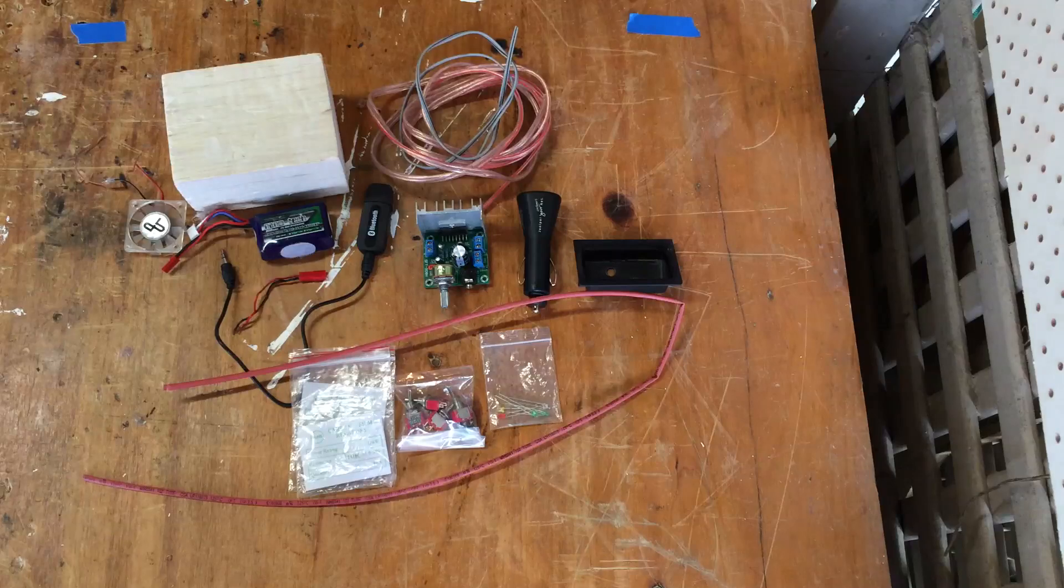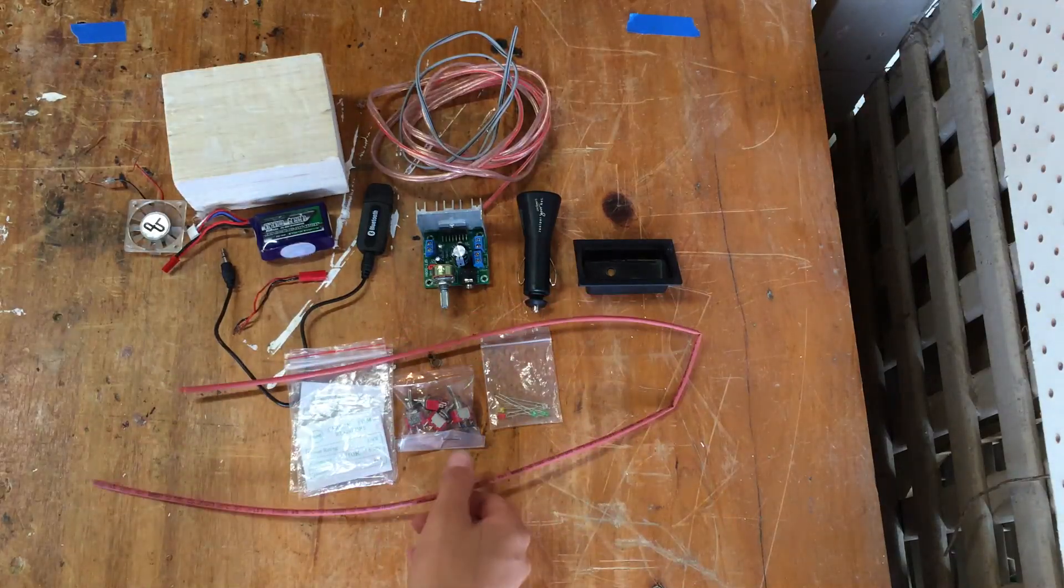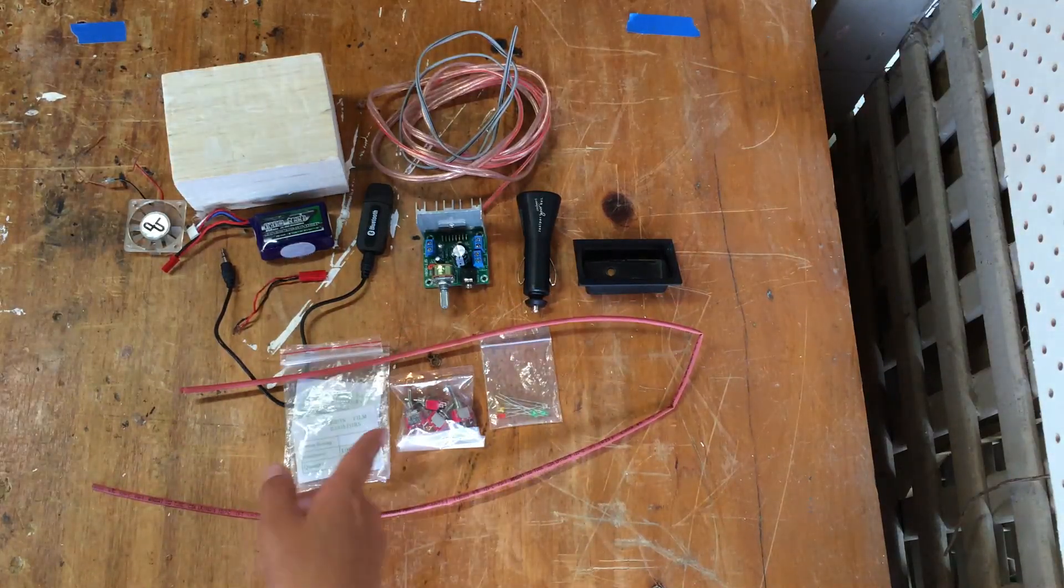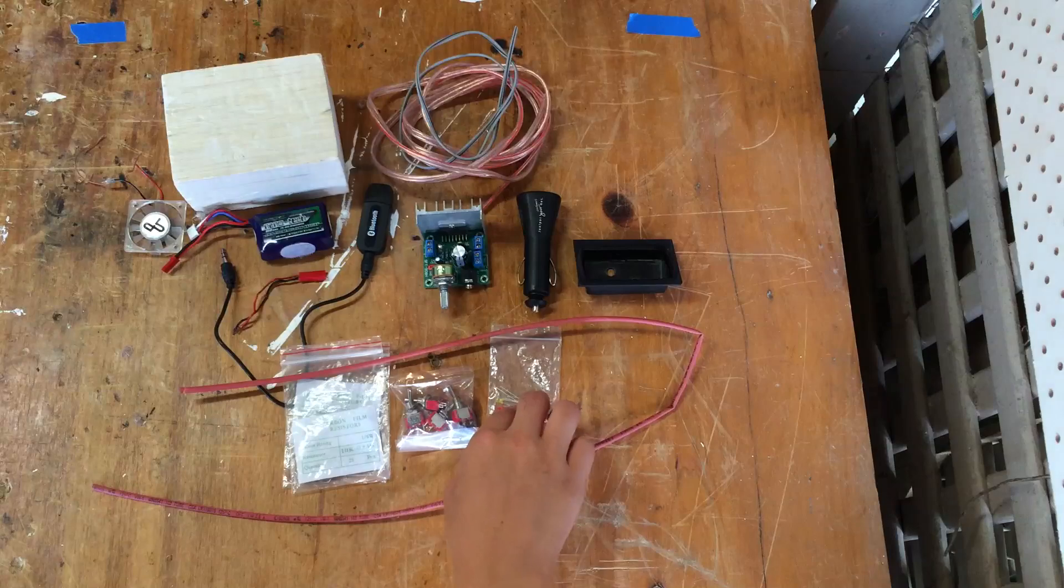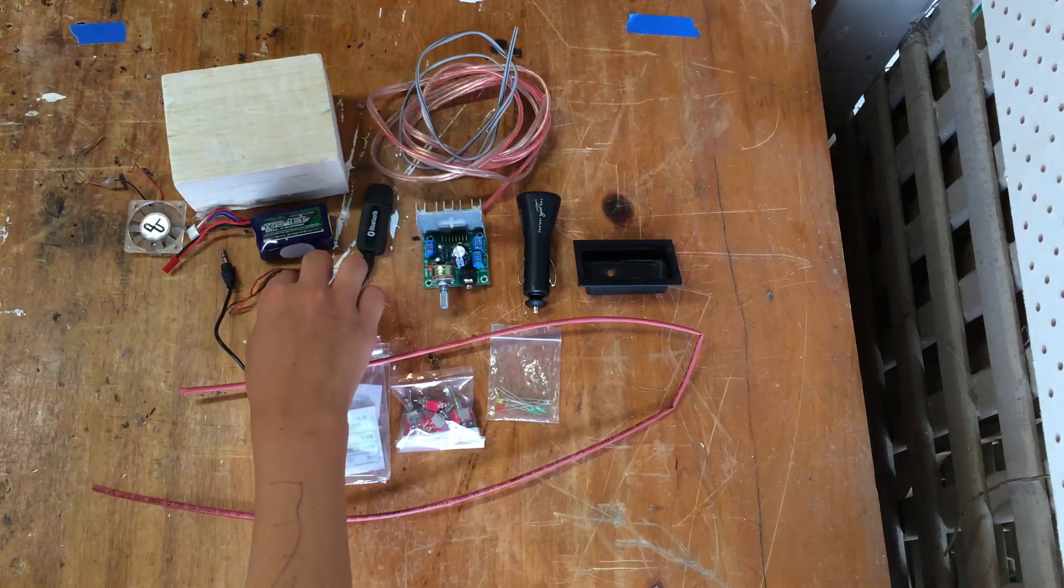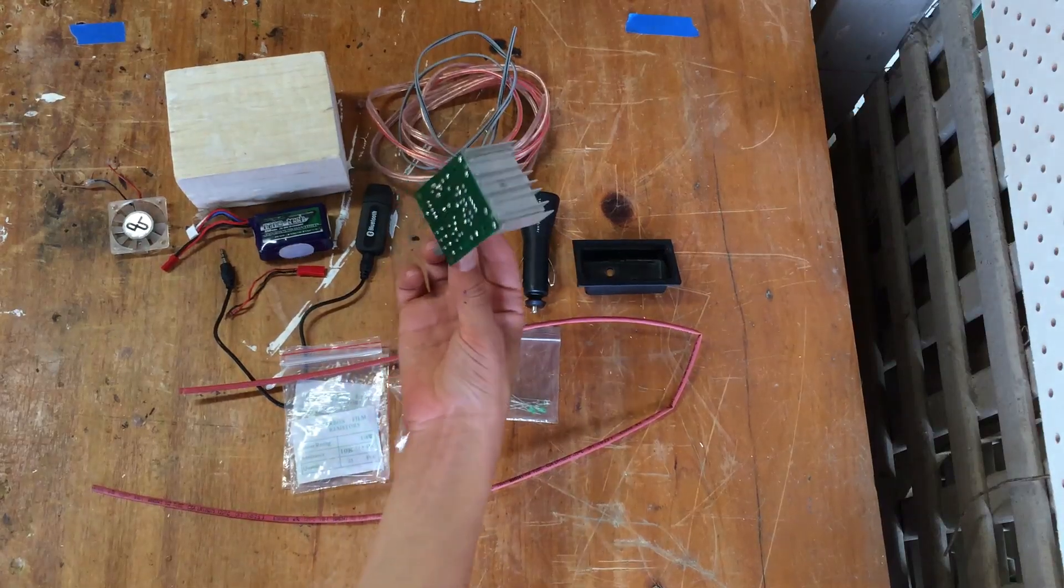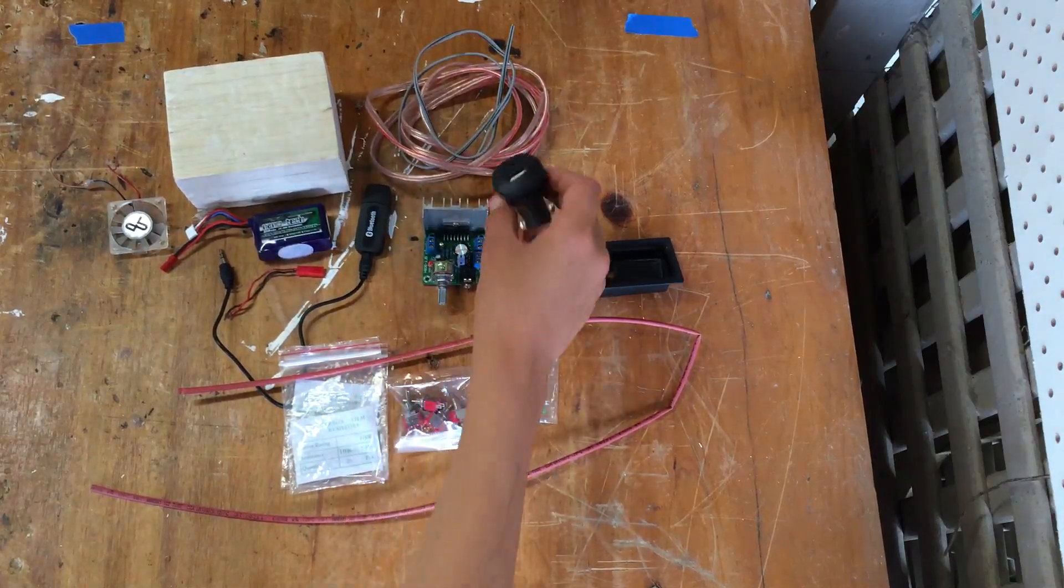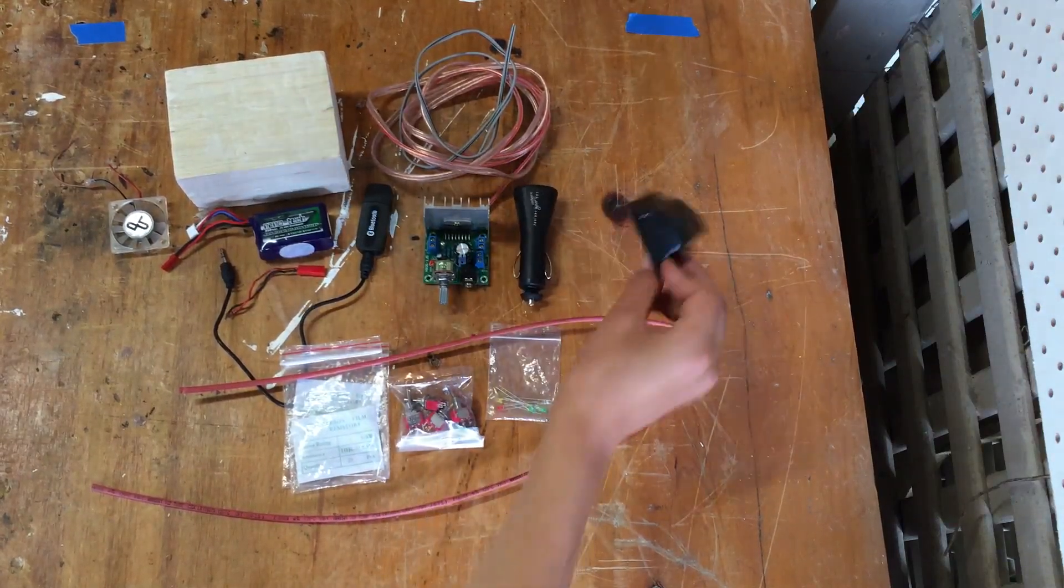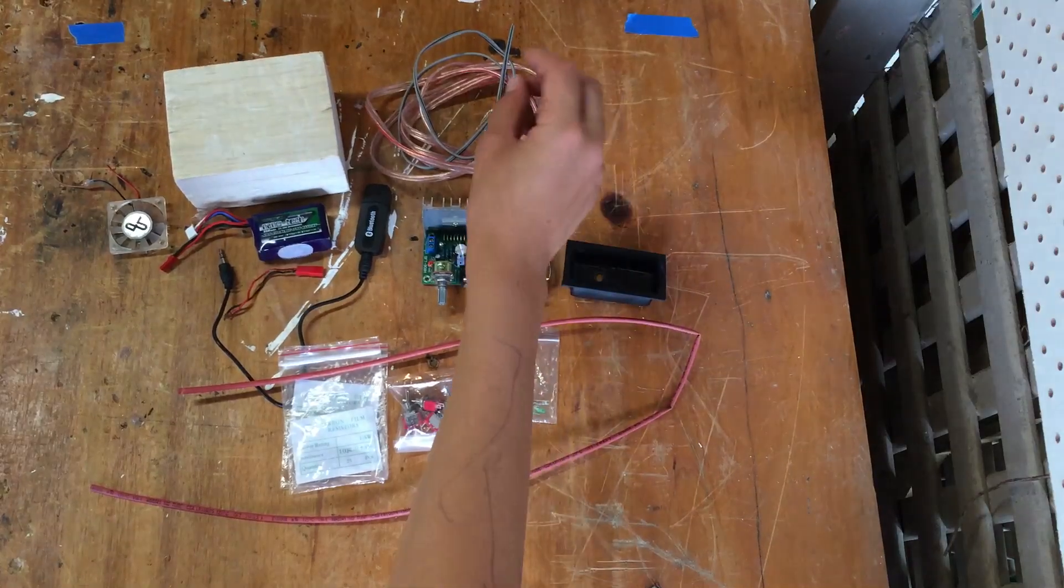Okay, so what you're going to need to build this is heat shrink, switches, a bunch of resistors, different colored LEDs, a battery and its connection, fan, balsa wood, 15 watt two-channel amplifier, USB charger, vacuum form plastic, and speaker cable.